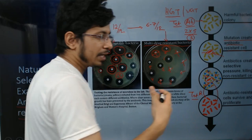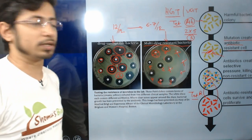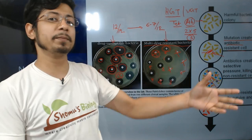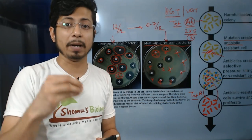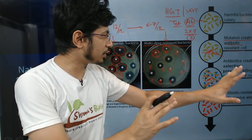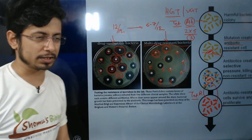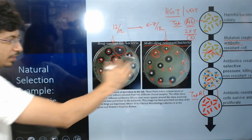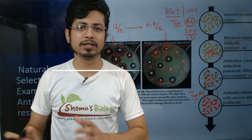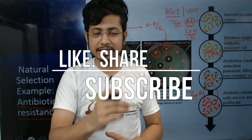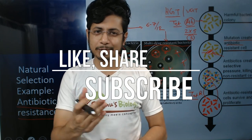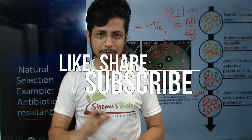This is exactly how natural selection works. In this case, the selection is made by us through improper use of antibiotics, which act as the selection pressure. This is a clear example of natural selection, and that concludes our understanding of natural selection as a whole. If you like this video, please hit the like button, share with your friends, and subscribe to this channel for more videos. Thank you, bye.